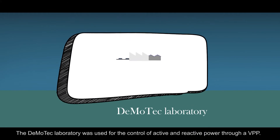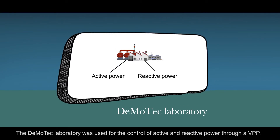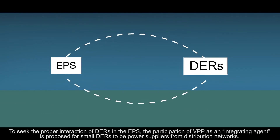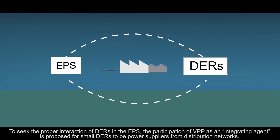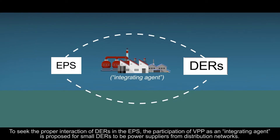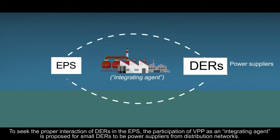The Demotech laboratory was used for the control of active and reactive power through a virtual power plant. To seek the proper interaction of distributed energy resources in the electrical power system, the participation of virtual power plant as an integrating agent is proposed for small distributed energy resources to be power suppliers from distribution networks.